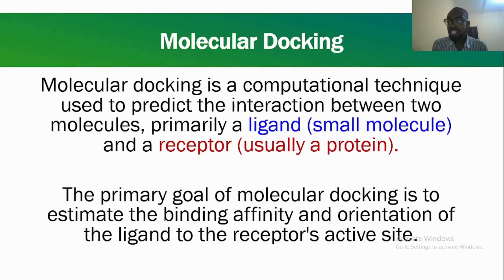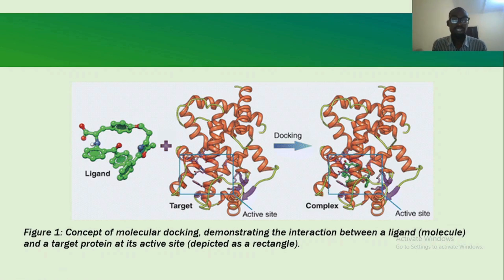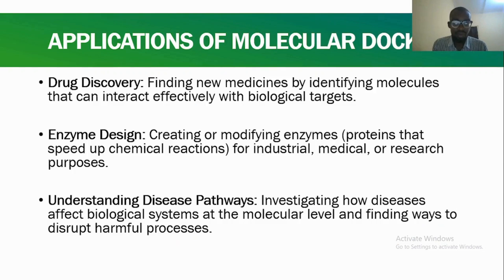Molecular docking also lets us see the orientation of that small molecule within the active site of the receptor. Not every part of the receptor is the best part for docking — it's important you get the correct active site. This figure shows what I'm talking about: you have a small molecule called the ligand, you have your target, and this is the active site. Once interaction takes place, docking gives us an estimate of that interaction in terms of binding energy and binding affinity, which is often given as docking scores.